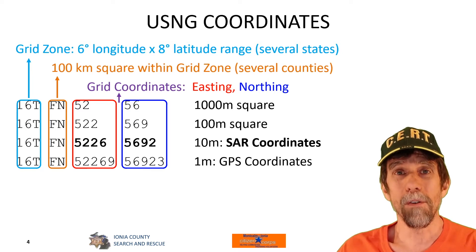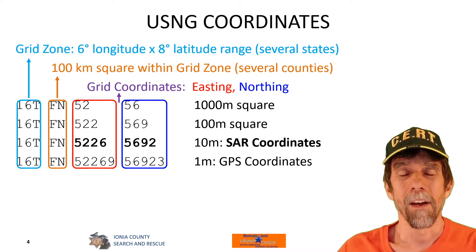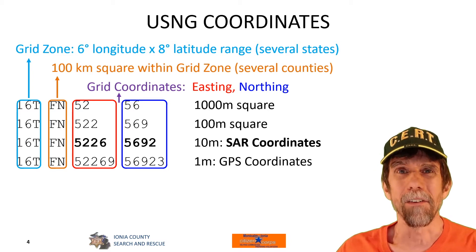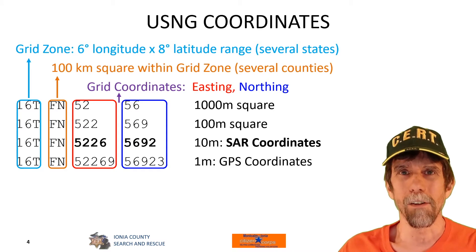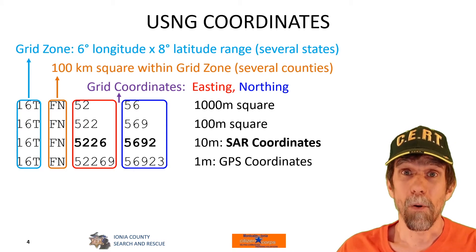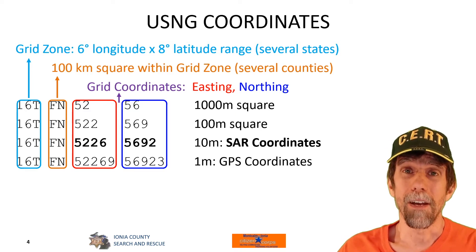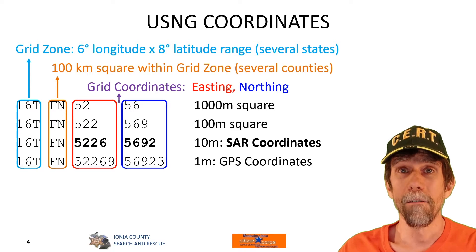A GPS will show you coordinates to one-meter precision — five digits of each — but it's really not that accurate for a small GPS. In fact, if you look at the coordinates, they'll jump around quite a bit over time. So again, SAR coordinates is a pair of numbers — in this case, I could relate a coordinate for search and rescue as 5226, 5692.